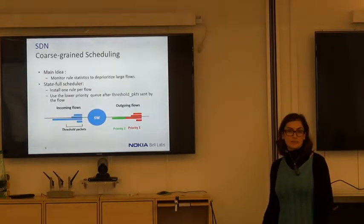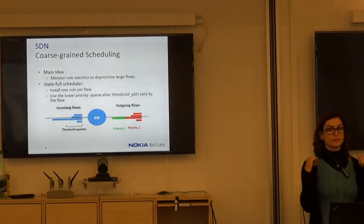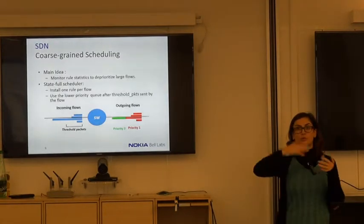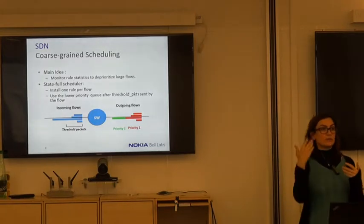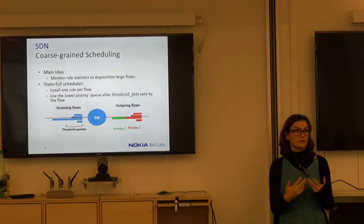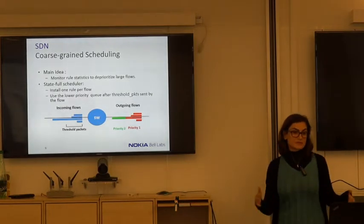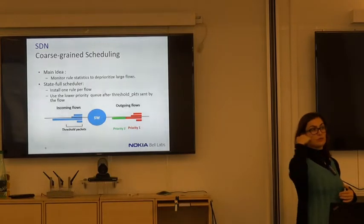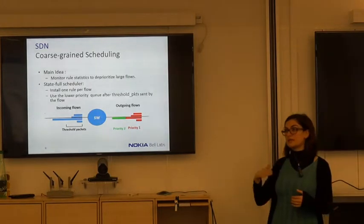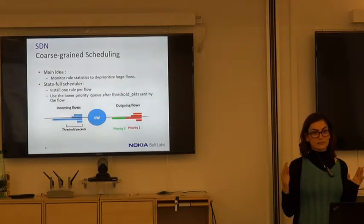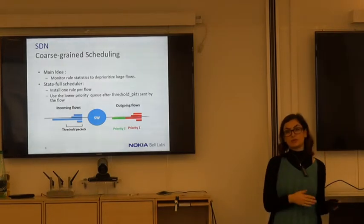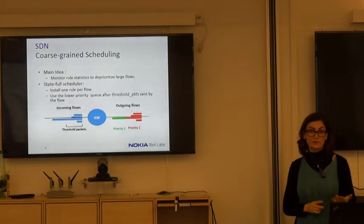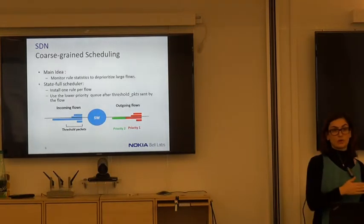To tackle end-to-end delay and give priority to short flows using SDN, we use coarse-grained scheduling. The controller has a view over all switches, so we can monitor switches and statistics to identify short and large flows. The simplest scenario: for every incoming flow, we install a rule and monitor how many packets it has sent. If it has sent more than a threshold amount of packets, the flow is considered large and deprioritized. However, this requires one rule per flow, so it doesn't scale — we have the scalability problem with SDN switches.